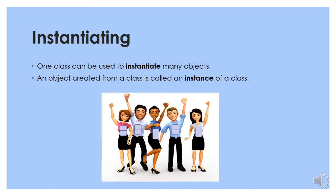What does instantiating mean? We can use a class to instantiate many objects. An object which is created from a class is called an instance of a class. In the picture you see five friends — they are instances of the Friend class.